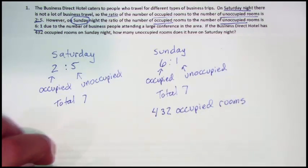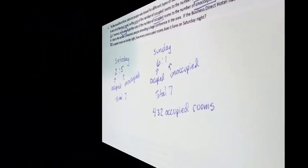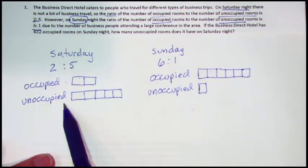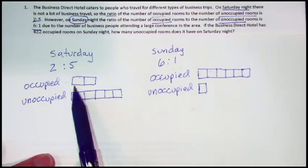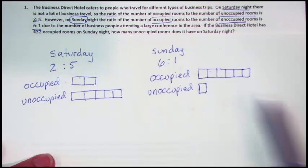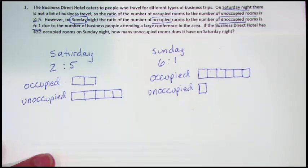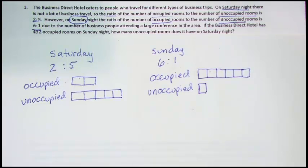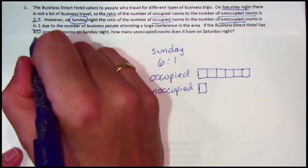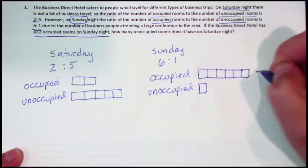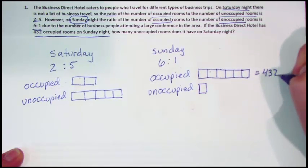Now that we have all of this information, we can build a couple of tape diagrams that are related. Here are two different tape diagrams, one for Saturday and one for Sunday. You can see I've labeled them occupied and unoccupied for Saturday — 2 to 5, so 2 boxes and 5 boxes. On Sunday, occupied to unoccupied is 6 boxes and 1 box to represent the ratio 6 to 1. Now I'm going to take the last piece of information: on Sunday, the Business Direct Hotel has 432 occupied rooms.